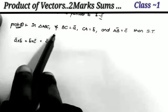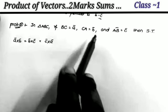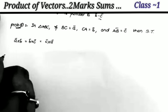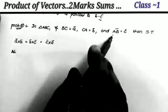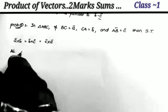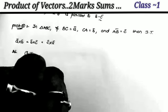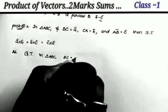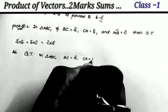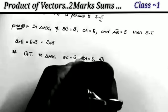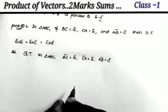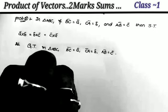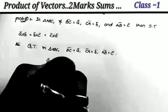The next problem: in triangle ABC, if BC = a, CA = b, and AB = c, then show that a cross b equals b cross c equals c cross a. Three side vectors are given and we have to show that these three cross products are equal. Given: BC = a, CA = b, AB = c.